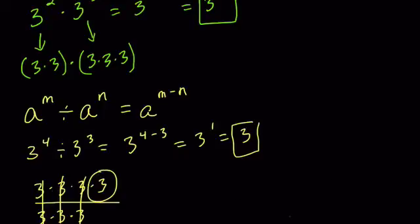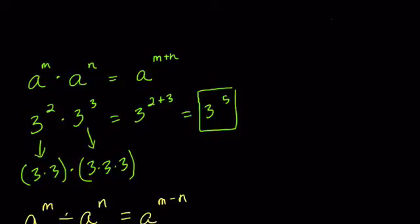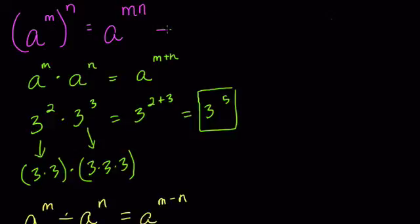The other scenario with basic laws of exponents is if you have something raised to the M power, and that is being raised to a power. In that case, you multiply the exponents. So it would be M times N.